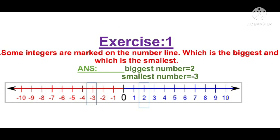Now let us start Exercise 1. First question: some integers are marked on the number line — which is the biggest and which is the smallest? The numbers given are −3 and 2. Observe: 2 is on the right side of zero and −3 is on the left side. So 2 is the bigger number and −3 is the smaller number. Answer: biggest number = 2, smallest number = −3.